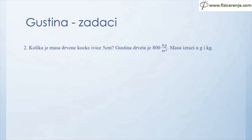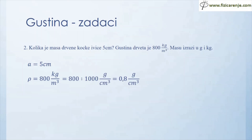Kolika je masa drvene kocke ivice 5 centimetara, ako je gustina drveta 800 kilograma po metru kubnom? Masu izraziti u gramima i u kilogramima. Data mi je ivica kocke 5 centimetara i gustina drveta 800 kg/m³, što mogu odmah prebaciti u grame po centimetru kubnom. To je 800 podeljeno sa 1000 g/cm³, što je 0,8 g/cm³. Zapreminu mogu dobiti u centimetrima kubnim, a gustina je u gramima po centimetru kubnom.